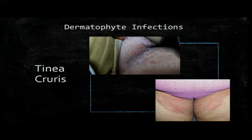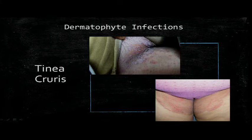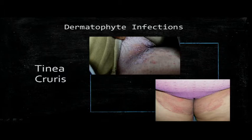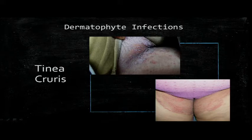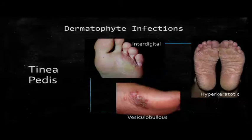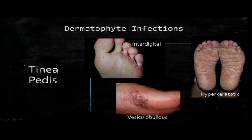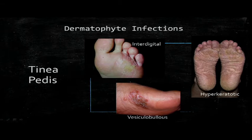Tinea cruris, also known as jock itch, is more common in men than women. You're going to see a sharply demarcated rash with raised borders and rarely vesicles in the inguinal area, upper thighs, perineum, and buttocks. Pruritus is very severe so secondary bacterial infection is common. It typically spares the scrotum in males, which helps differentiate it from candidal intertrigo, which often does involve the scrotum. Candida will also have satellite papules and pustules. Treatment with steroid cream or nystatin thinking it's candida will lead to tinea incognito and improper treatment.